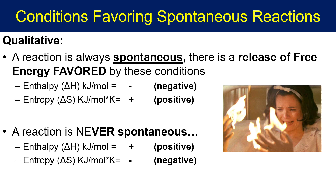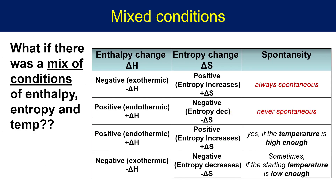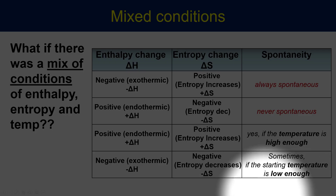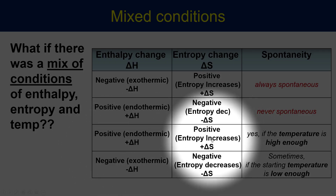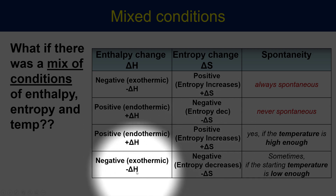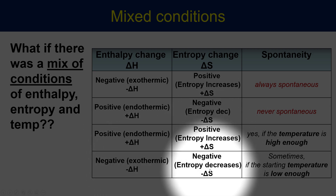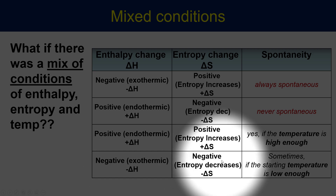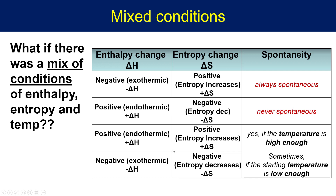Conversely, reactions will never be spontaneous when we have a positive delta H and negative entropy. The question always comes up: what happens if you have a mix of conditions? If your reaction is endothermic but your entropy is increasing tremendously, or if you have an exothermic reaction but entropy is decreasing — a lot of these mixed conditions really depend on whether the temperature value is high enough, or in some cases, low enough. Make sure you stop the video now and copy down this chart.